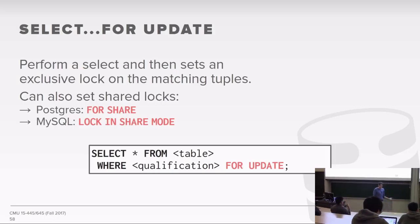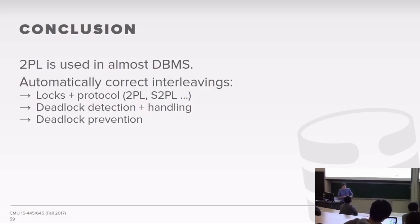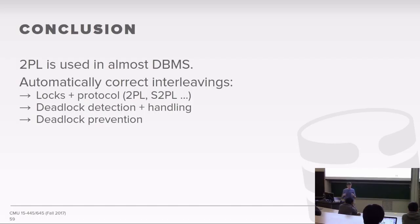Another useful SQL feature is providing a hint that you're reading a tuple now but plan to update it later. Rather than taking a shared lock when you read, you can tell the database to take the exclusive lock immediately. The syntax is SELECT * FROM table WHERE ... FOR UPDATE. Without FOR UPDATE, under two-phase locking the system takes a shared lock. With FOR UPDATE it tries to take an exclusive lock.